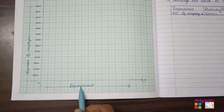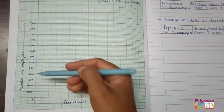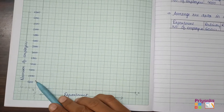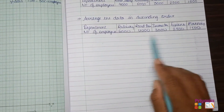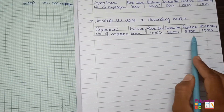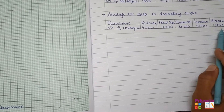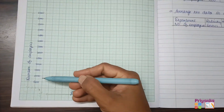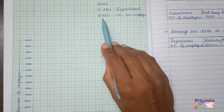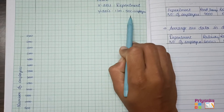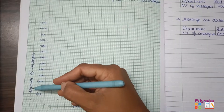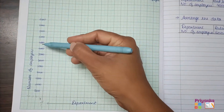On the x-axis we denote 'Department,' and on the y-axis, don't forget to write 'Number of Employees.' Before writing the number of employees, first check the numbers given — they are in thousands: six, four, three, two thousand five hundred, and one thousand five hundred. The distance of five hundred is made for each centimeter, so write on the y-axis that one centimeter represents five hundred employees.